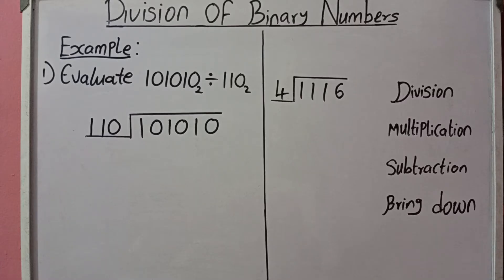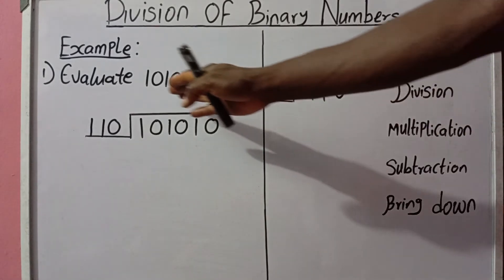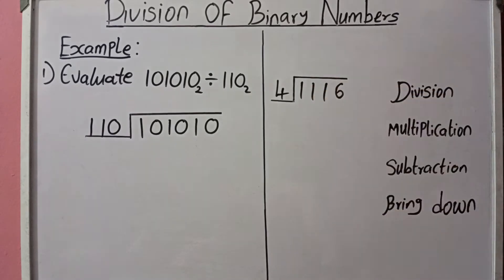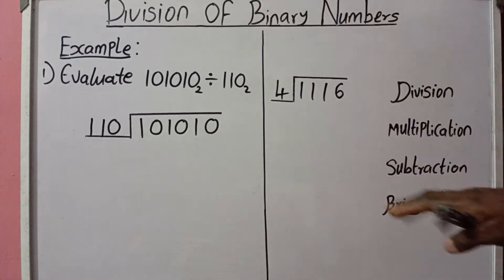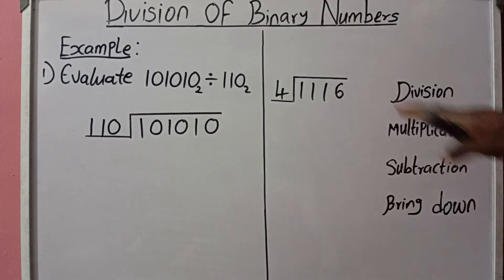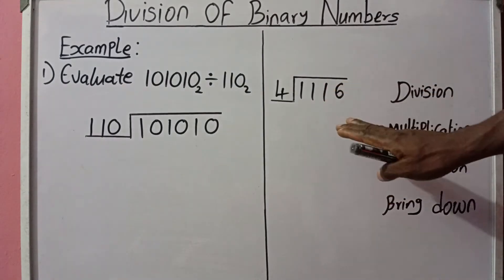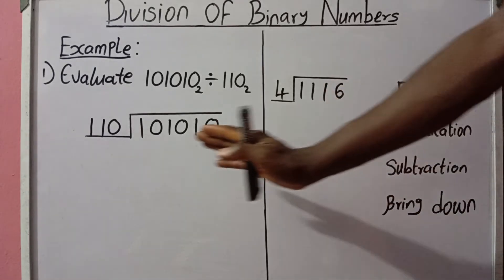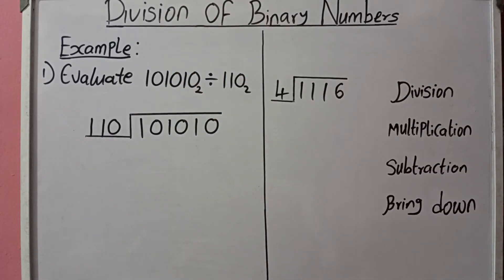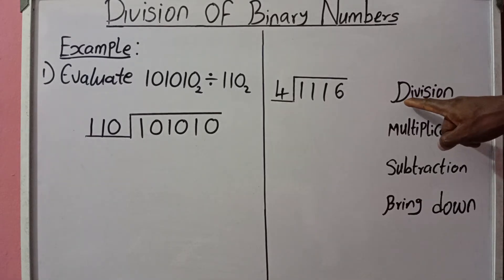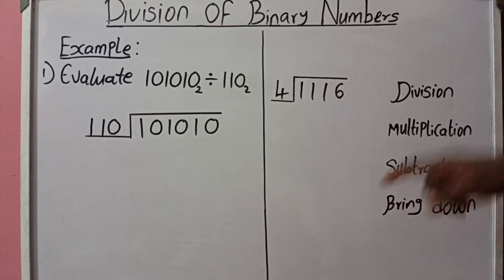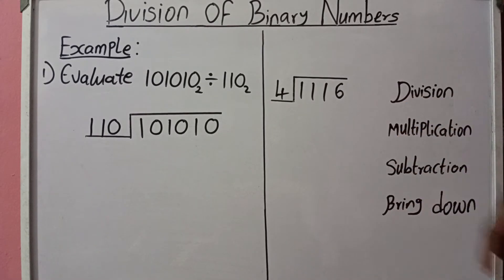Today we shall be looking at a very simple question: evaluate 101010 base two divided by 110 base two. Before we delve into this question, let's look at a simpler ordinary example. The approach we are going to use is the long division method, and I will use the acronym 'Dr. Michael Studied Biology' to guide the steps.